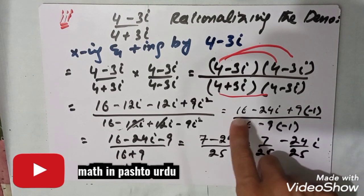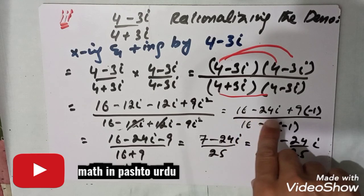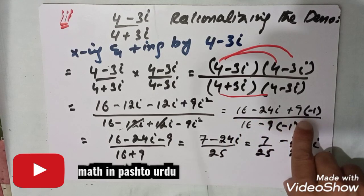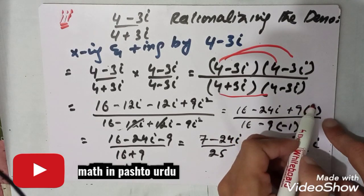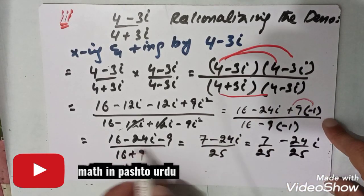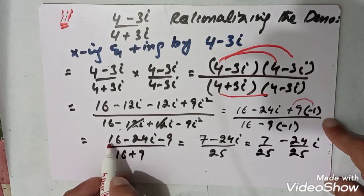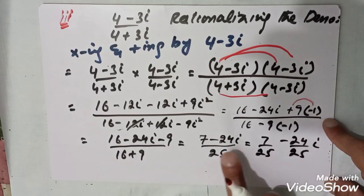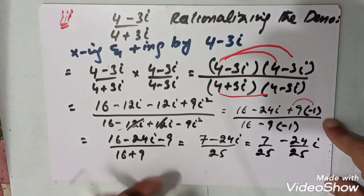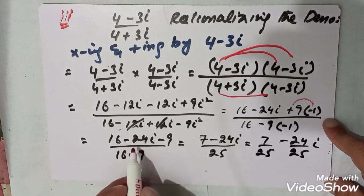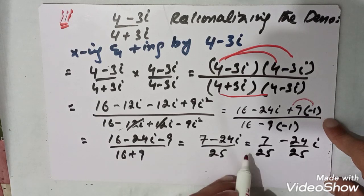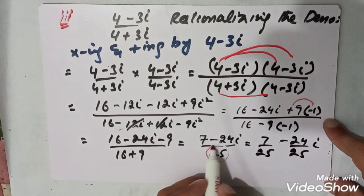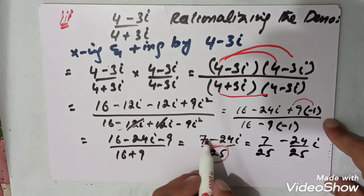Simplifying the numerator: 16 plus 9 times minus 1 gives 16 minus 9, which equals 7, and the iota terms give minus 24 iota. In the denominator, 16 plus 9 gives 25. So we have (7 minus 24 iota) divided by 25.